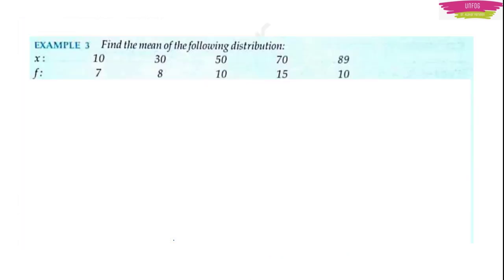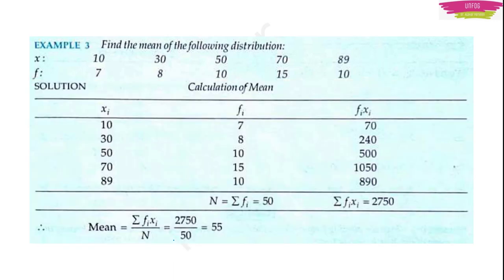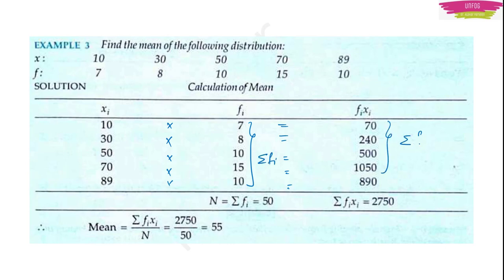Another example: find the mean of the following distribution. They have given a frequency distribution table. You multiply all Xi and Fi to get FiXi values. Then add to find summation Fi and summation FiXi. Then take summation FiXi by summation Fi and you will get 55 as the mean.